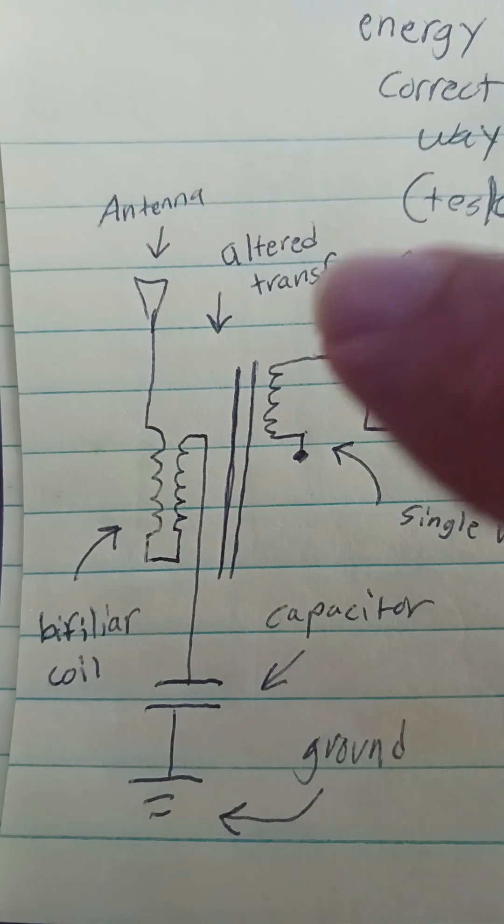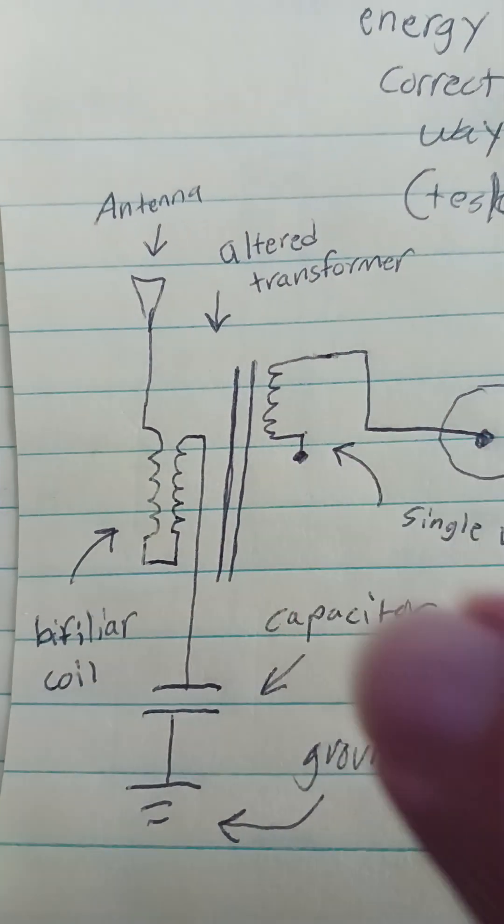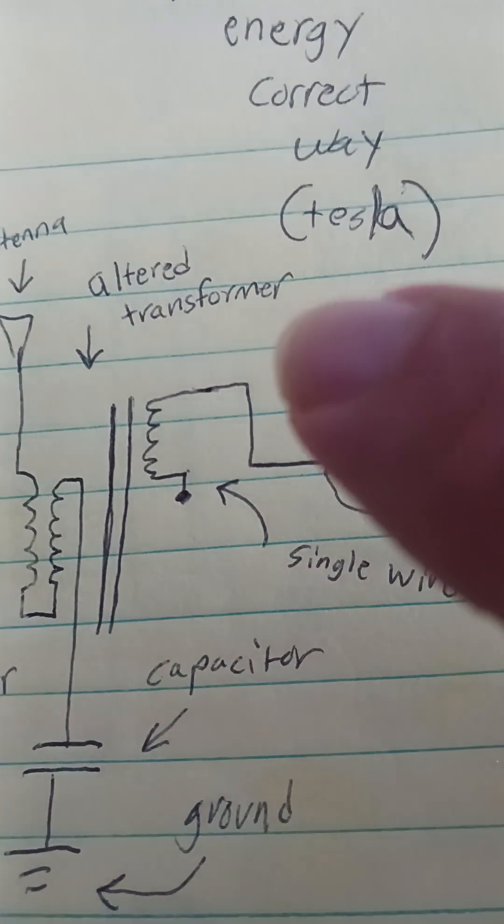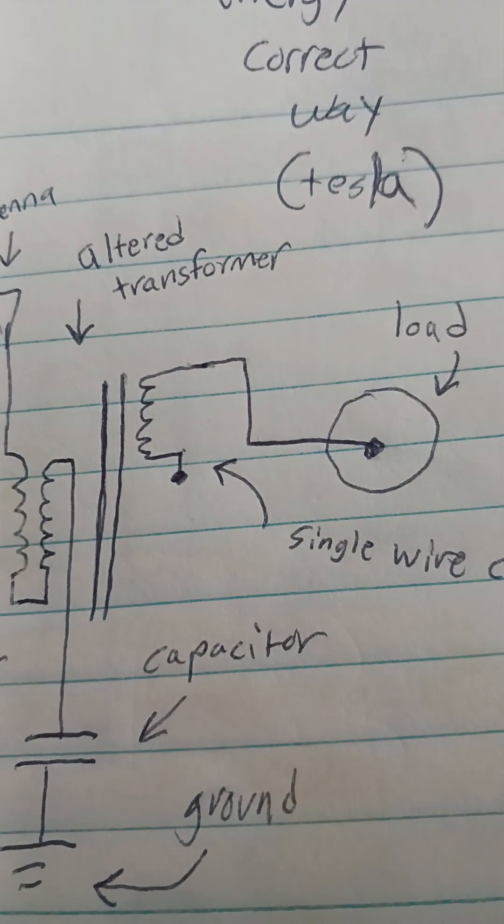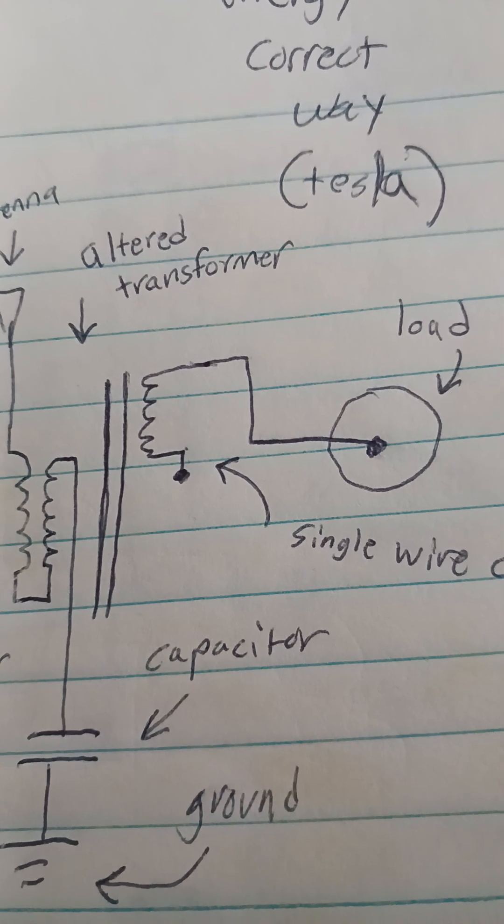These two bars here represent the solenoid and iron bar. The output is one single wire, no return path, and it goes up to a single wire Tesla bulb.